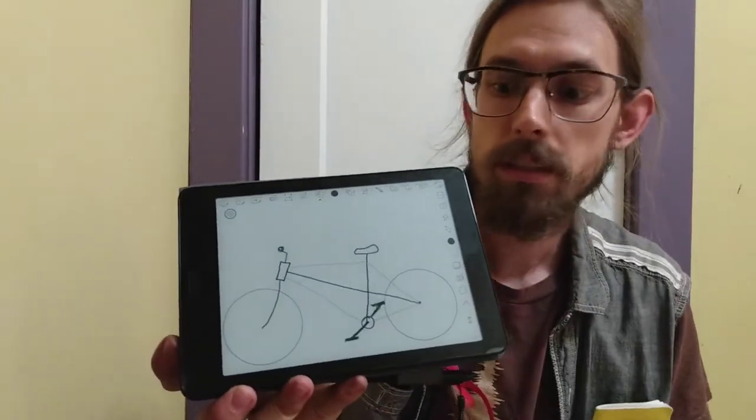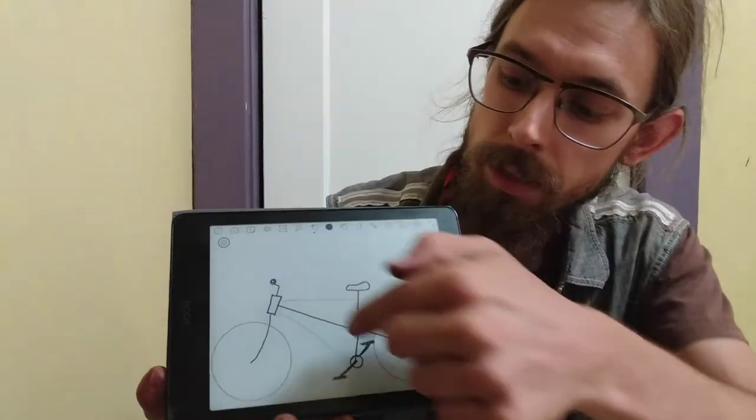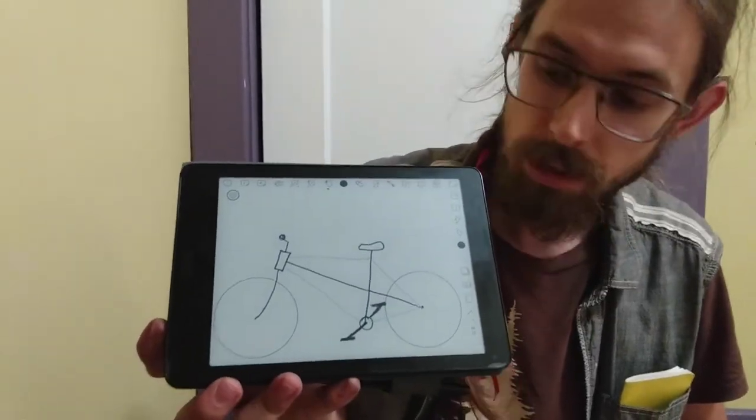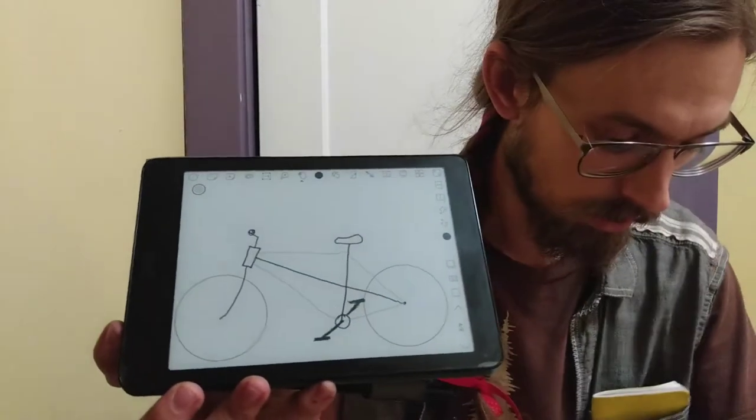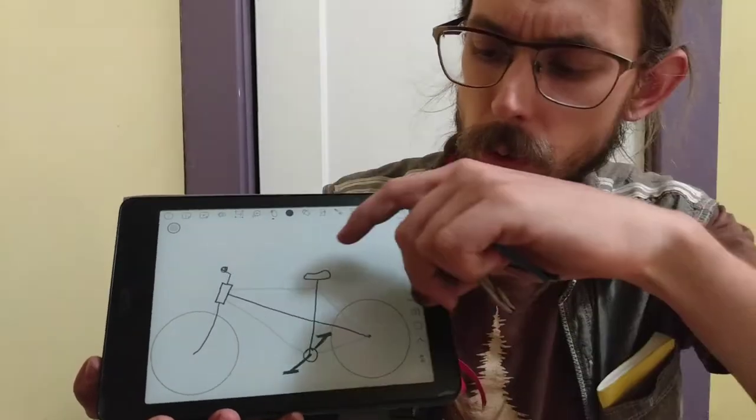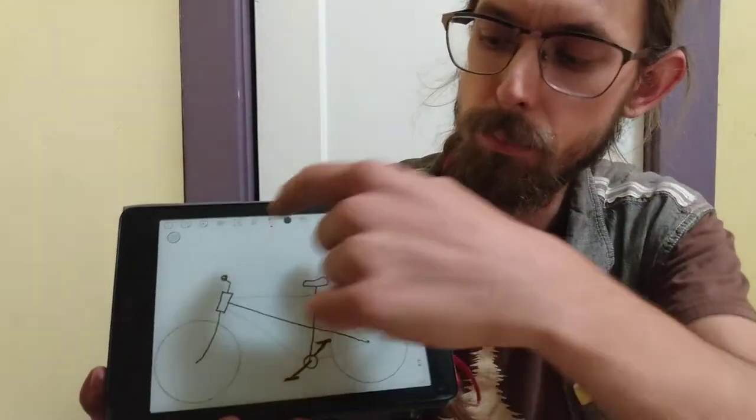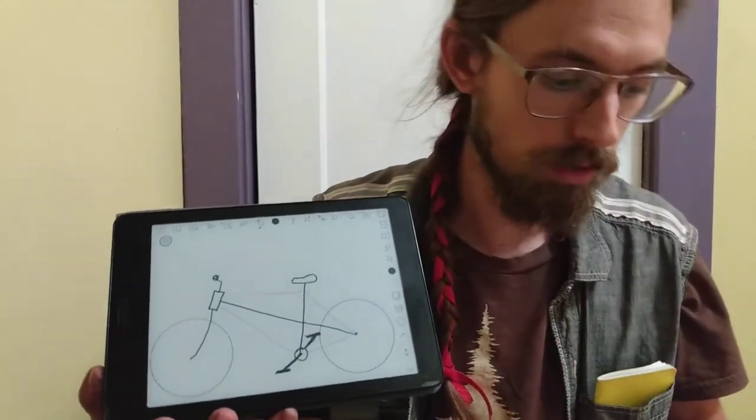Those are the light gray lines running around the outside of the traditional diamond frame. And those serve to hold the distances between the various parts. Those keep everything under tension.